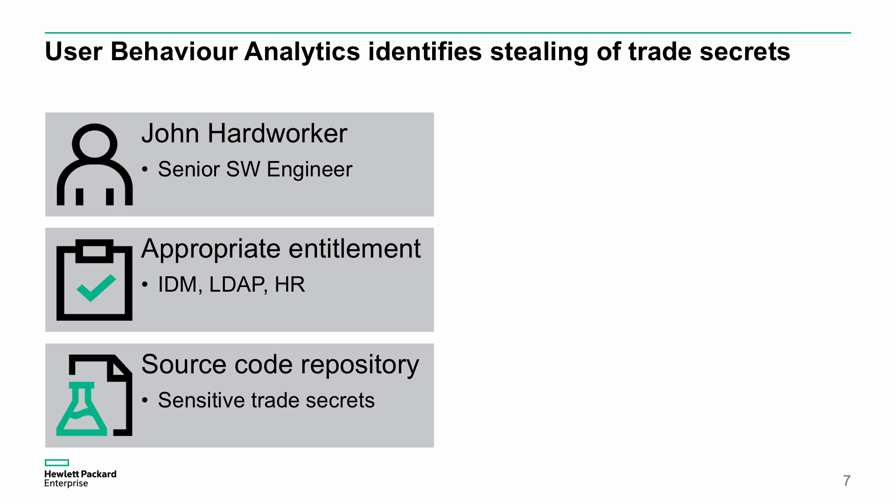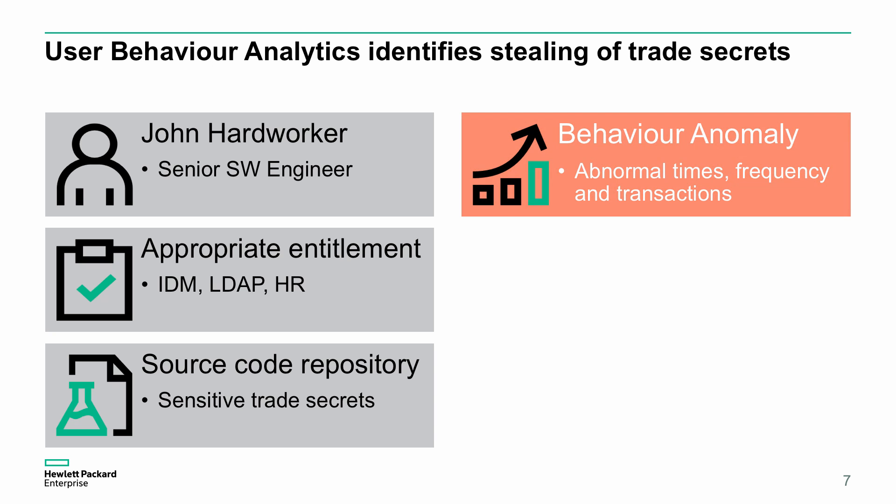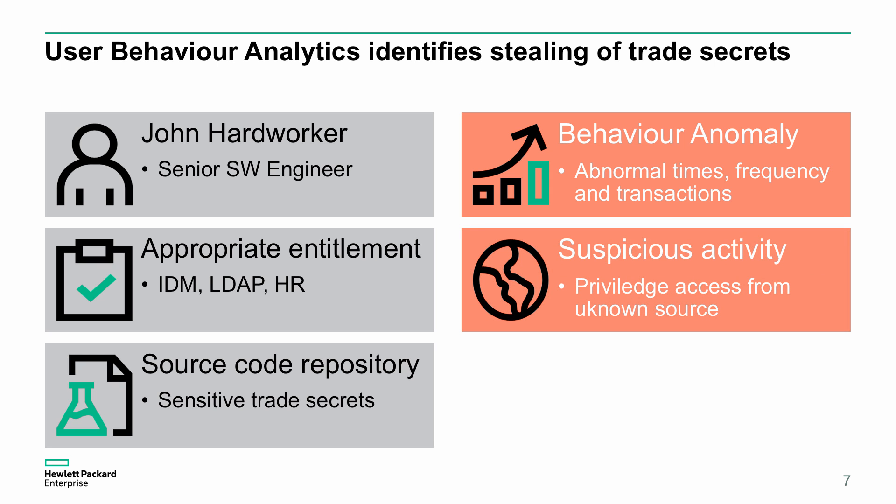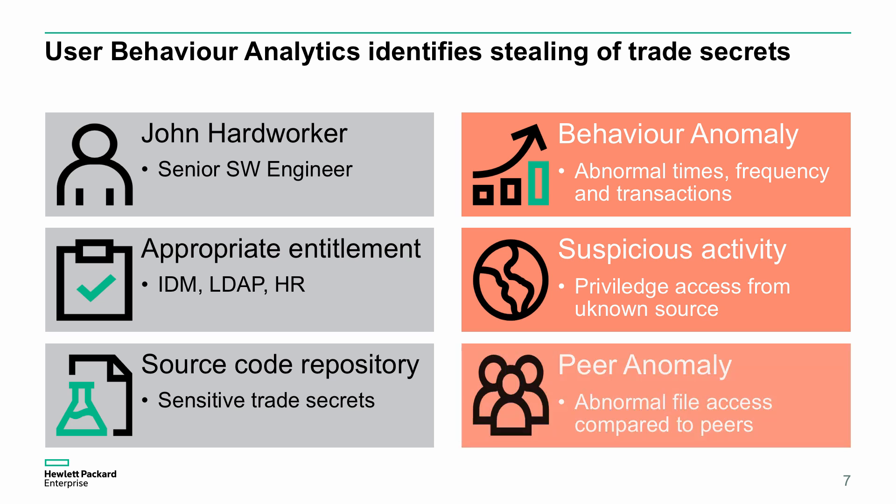Let's dig into a couple of examples. We can see user behavior analytics identifying the stealing of certain trade secrets. We have a software engineer with their appropriate entitlement — they have access to sensitive trade secrets. But we need to identify what the normal activity types are: what they're doing that's normal and, therefore, what's abnormal. What's the frequency? When do they turn up to the office? When do they leave? When are they accessing systems they wouldn't normally access? We then compare those activities to other people in their group, their role, their location, their job title, even those who share the same manager.